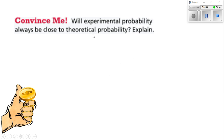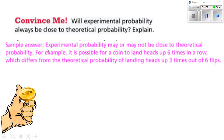Will experimental probability always be close to theoretical probability? I would say most of the time, but definitely not every time. Experimental probability may or may not be close to theoretical probability. For example, it is possible for a coin to land heads up six times in a row, which differs from the theoretical probability of landing on heads three times out of six flips.